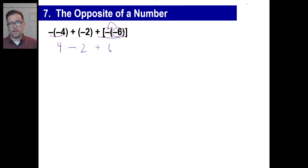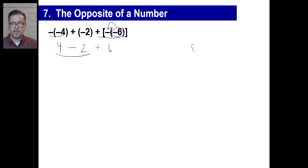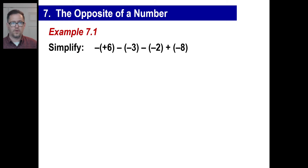You can go left to right on these — piece of cake. Four minus two is two. Plus six is eight. Got it.